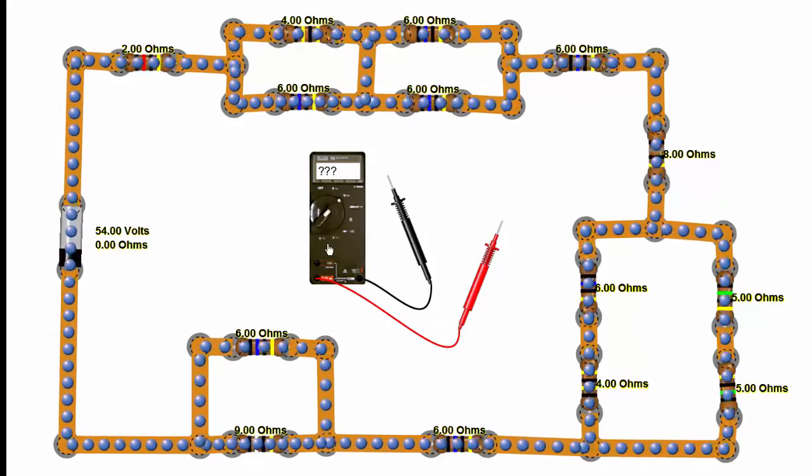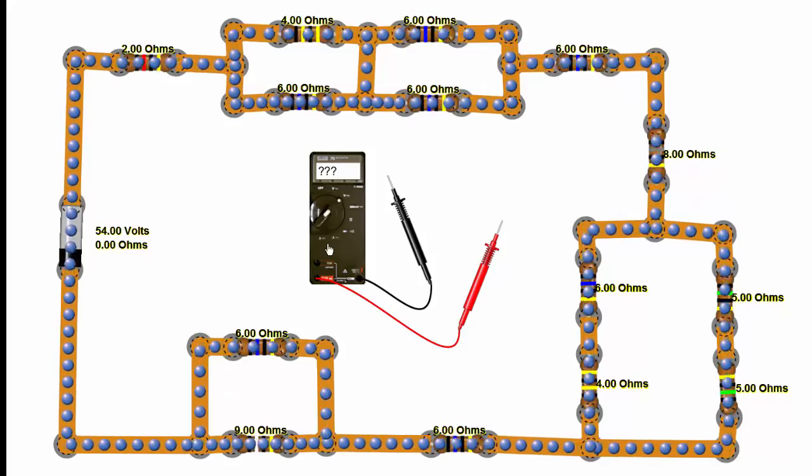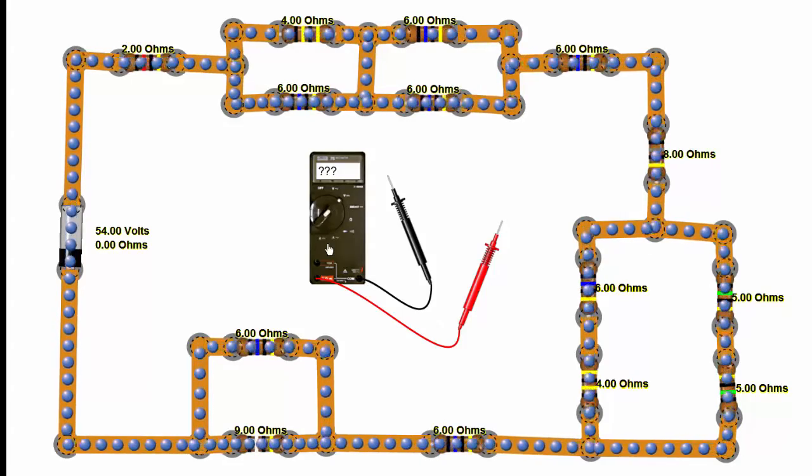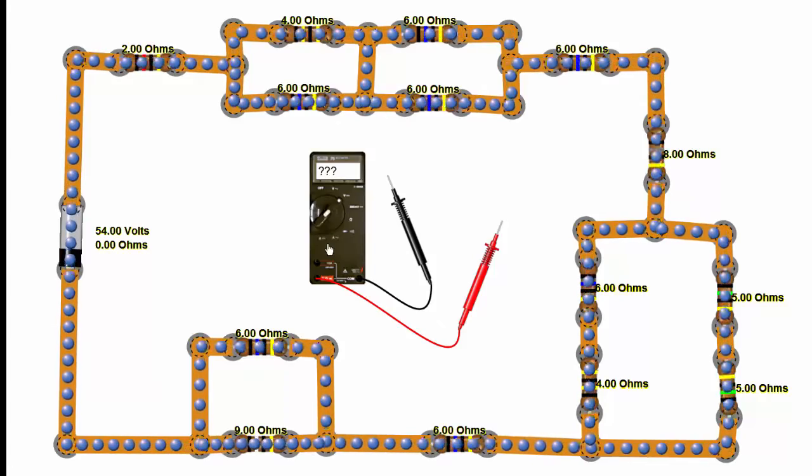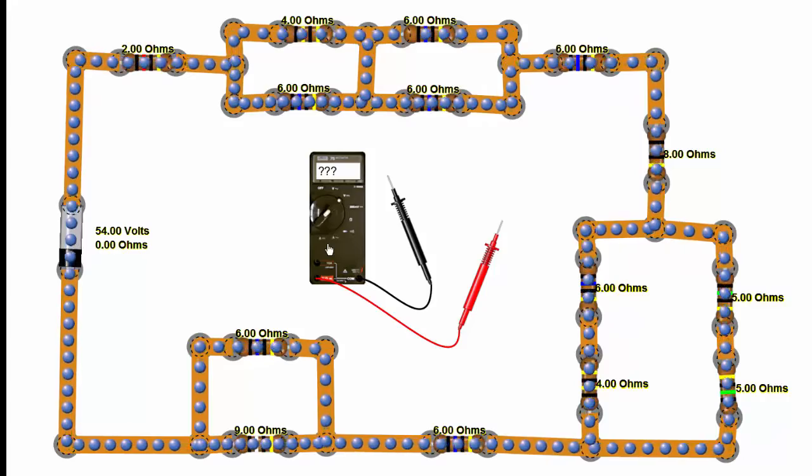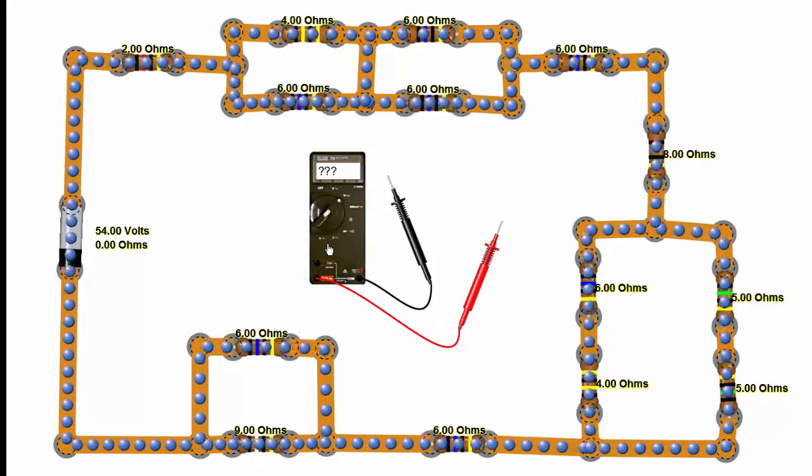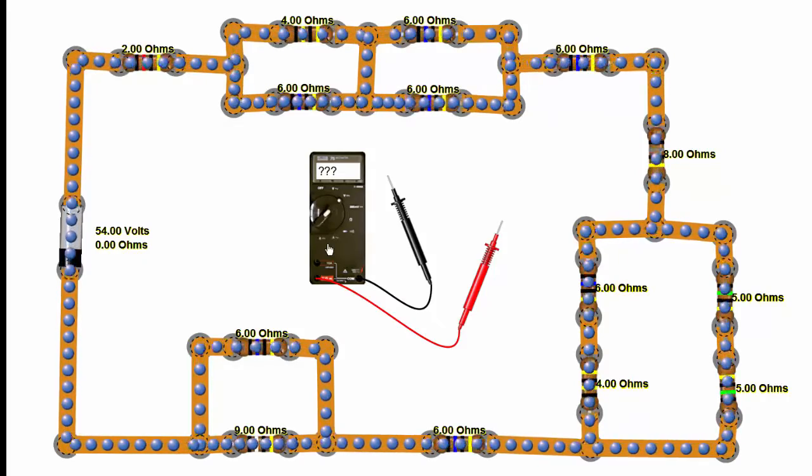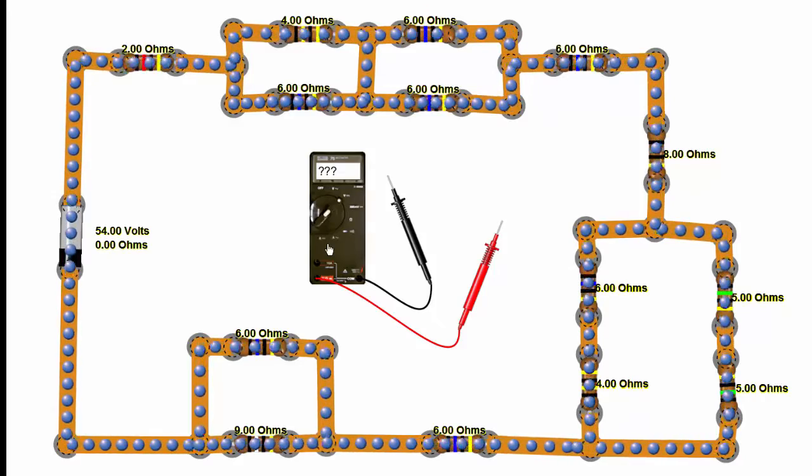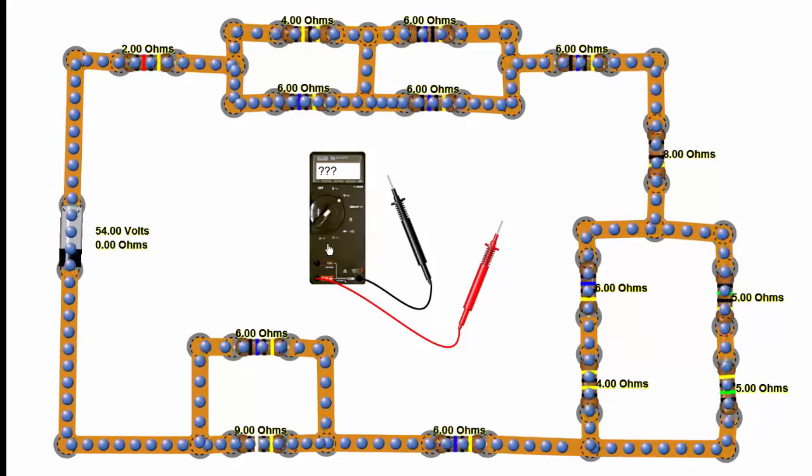Electron flow is always going to be from the negative terminal of the battery and away from the negative terminal of the battery. When we talk about conventional current flow in electrical engineering, that's really just a holdover from days when we believed that current was from positive to negative. It turns out it doesn't matter what your convention is as long as you're consistent with what you do.